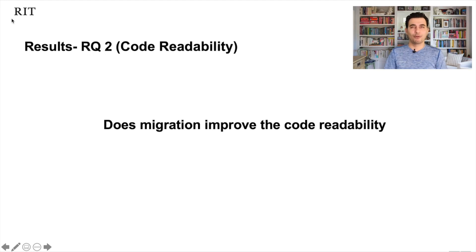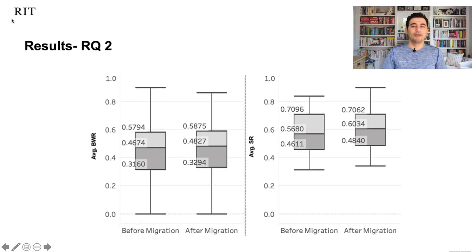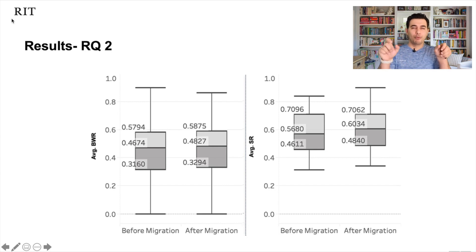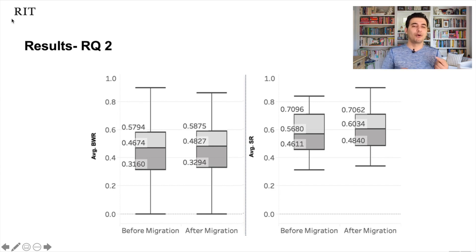Another research question is: does migration improve code readability? The results show, using two approaches from two existing studies, that both tools indicate readability improved. The first tool showed improvement from 4.67 to 4.8, and the second tool showed improvement from 0.56 to 0.60. We used two tools to reduce false positives and cross-validate how each tool measures code readability.